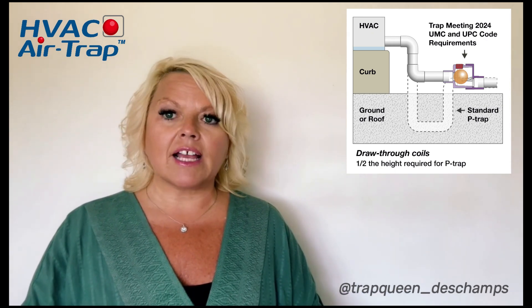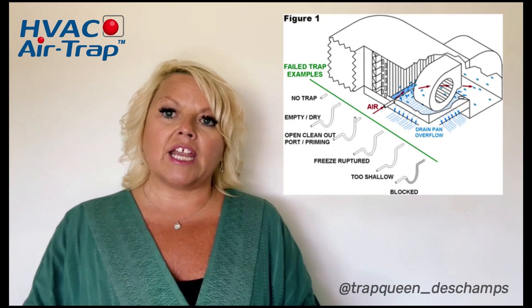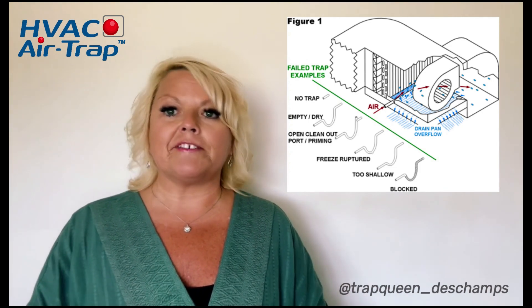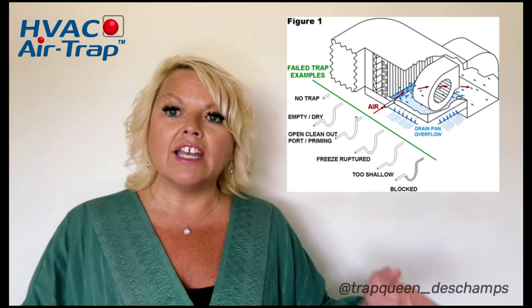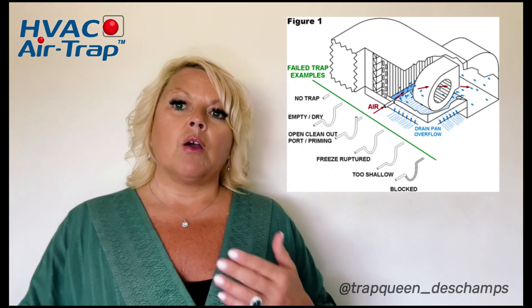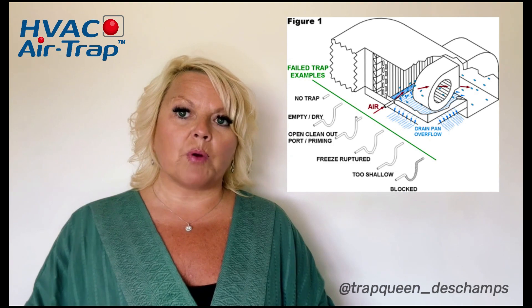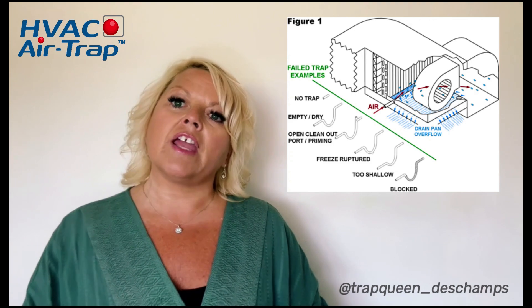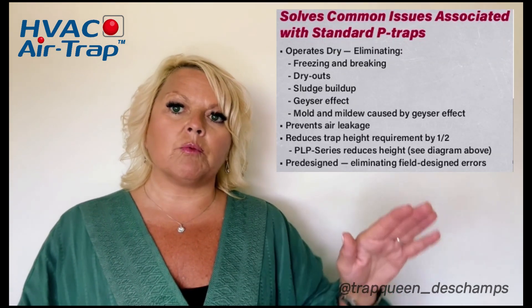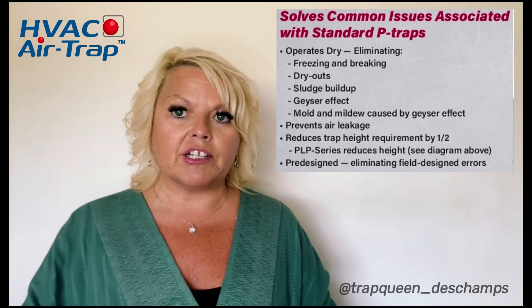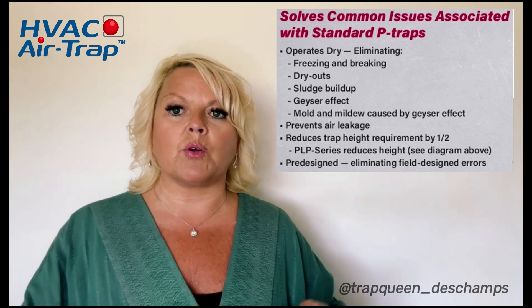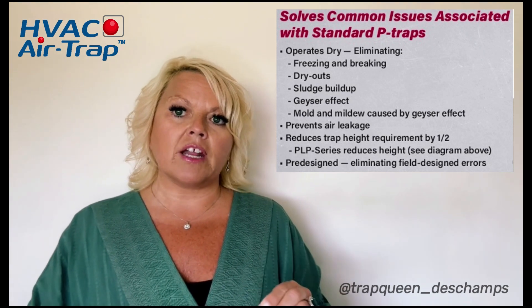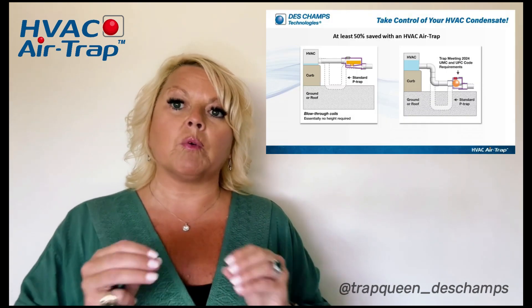Frozen broken traps — how does that happen? Typically it's because a standard P-trap has maintained water in the line. It most commonly happens during the change of season, whether it's fall when you go from warm weather to cold weather and there's still water in the line. At the end of the cooling season you need to flush the line. In the springtime the line is dry, and for the trap to function properly it has to have water in it. Many homeowners and facilities have their HVAC set to auto, flipping from heating to cooling. Once an 80 or 70 degree day kicks on the air conditioning, you get water in the line — and then that night it goes below freezing, causing frozen broken traps. The difference with the air trap is that it only has water when condensate is flowing. Once condensation stops, the trap is dry.